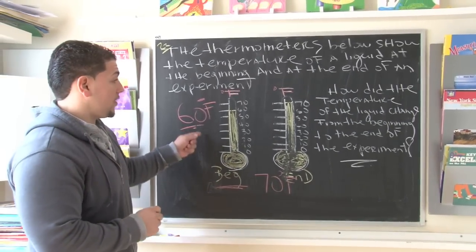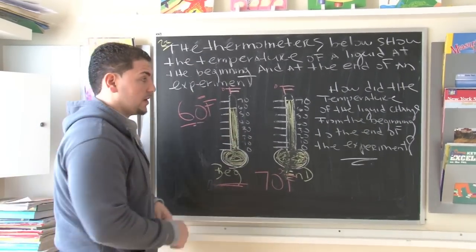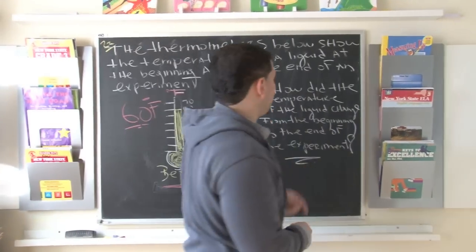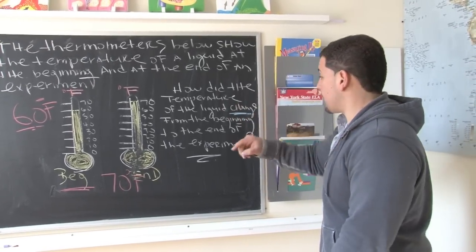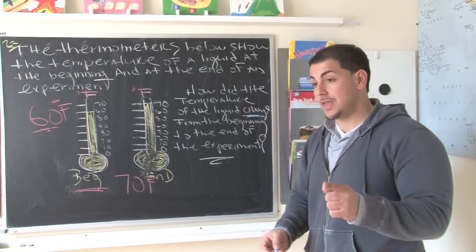We know at the beginning it was 60 degrees. We know at the end it was 70 degrees. So let's look at the question. The question says, how did the temperature of the liquid change from the beginning of the experiment to the end?